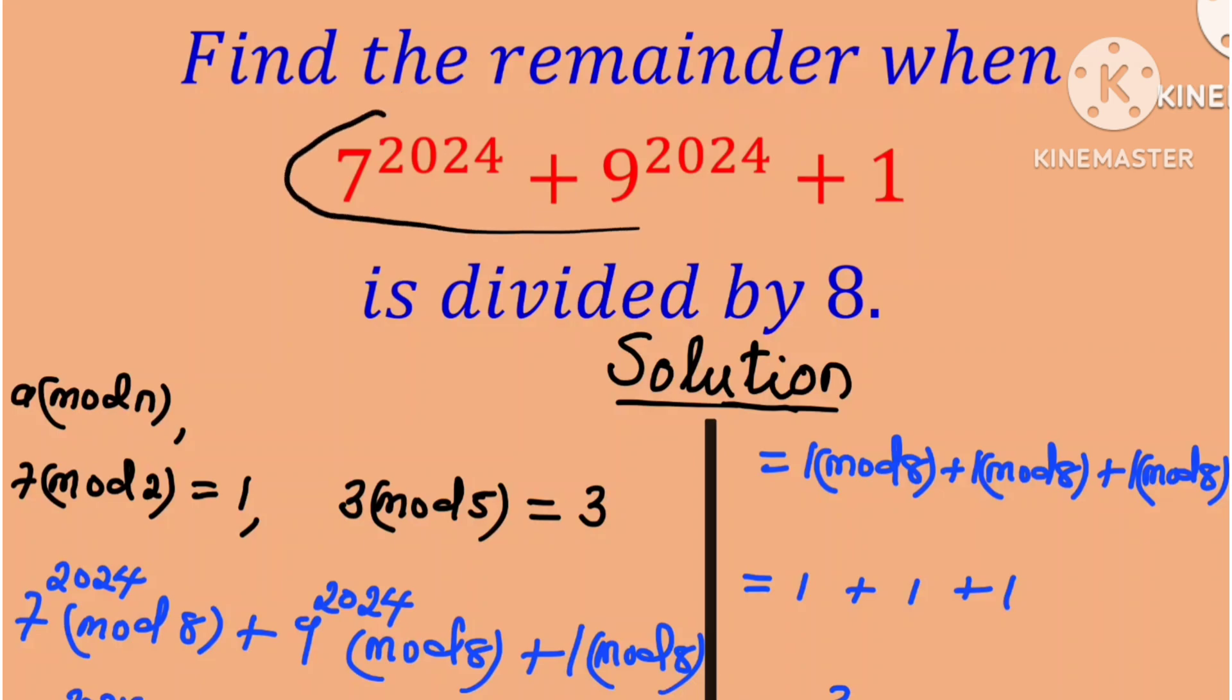So when this number is divided by 8, the remainder is just 3. Thanks for your time and see you in the next video.